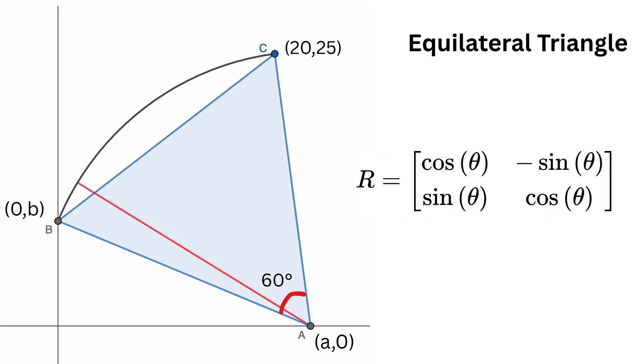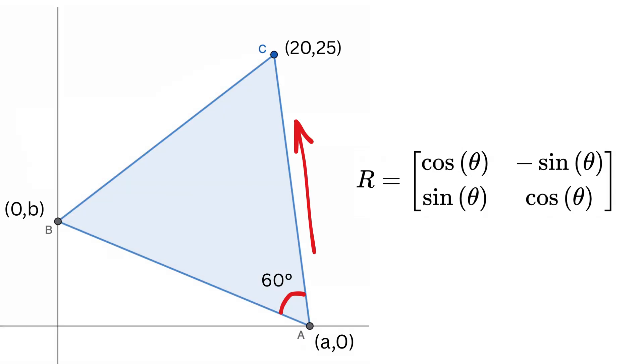So, let's rotate point C 60 degrees counterclockwise about point A, like this. It will land on point B.